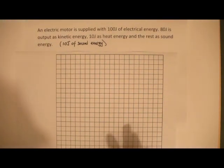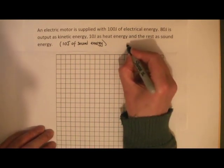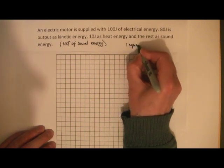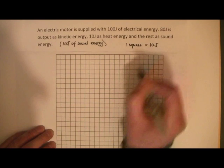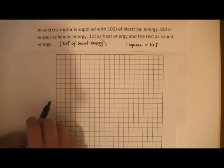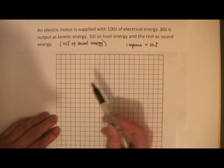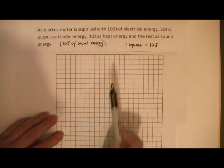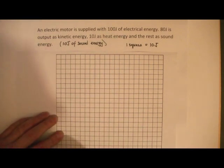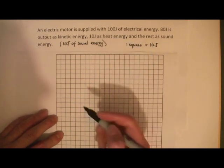I now have all the information I need to draw the Sankey diagram. I need to choose a scale so I can fit it on the grid here. The scale I'm going to choose is 1 square equals 10 joules. The Sankey diagram shows energy flowing in this direction, so I'll start with the base of the arrow that represents the 100 joules of energy going in. Using this scale, 100 joules must be 10 squares wide.